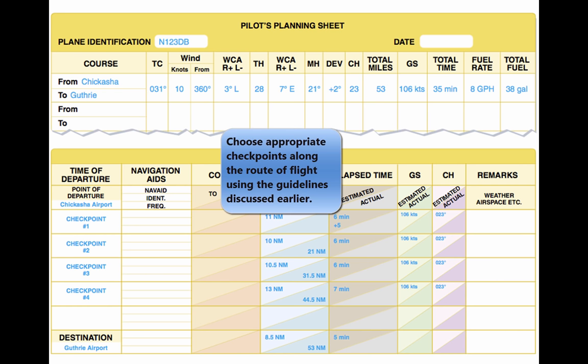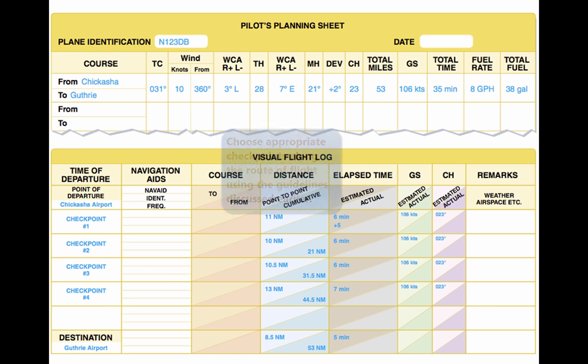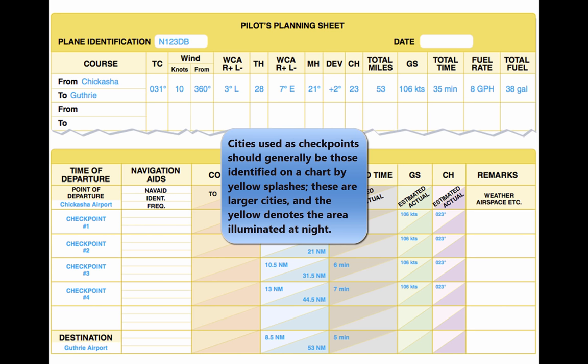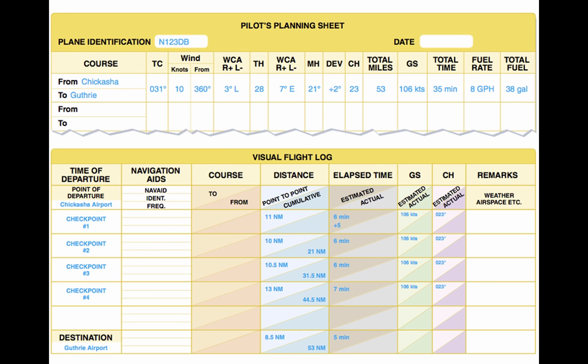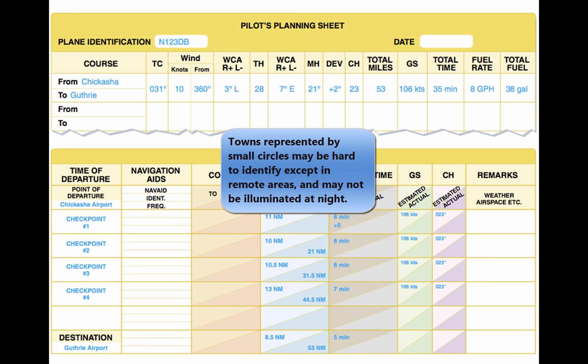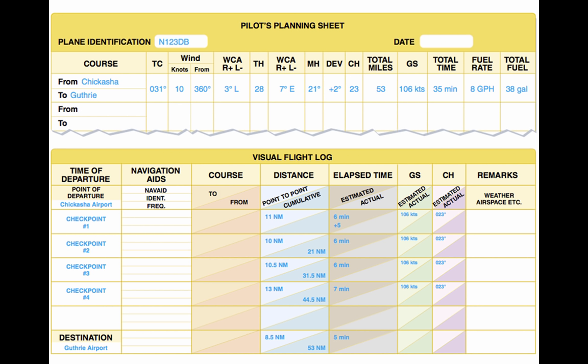Appropriate checkpoints should be selected along the route and noted. These should be easy to locate points, such as large towns, large lakes and rivers, or combinations of recognizable points, such as towns with an airport, towns with a network of highways, and railroads entering and departing. Normally, choose only towns indicated by splashes of yellow on the chart. Do not choose towns represented by a small circle — these may turn out to be only a half-dozen houses. However, in isolated areas, towns represented by a small circle can be prominent checkpoints.